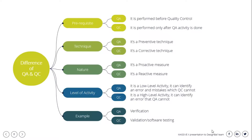In terms of nature, quality assurance is a proactive measure whereas quality control is a reactive measure. Proactive measures are preventive actions taken to decrease the likelihood of an incident occurring, whereas reactive measures are those that alter the response under investigation.